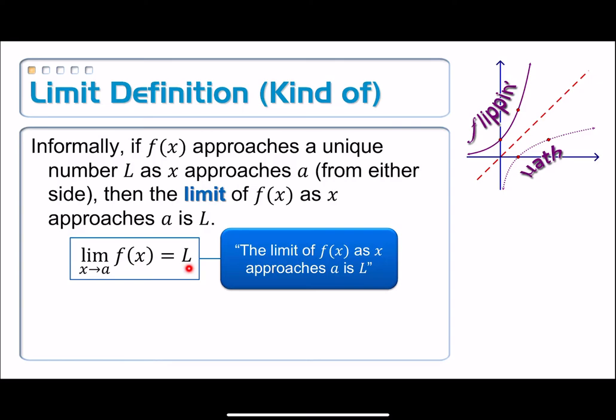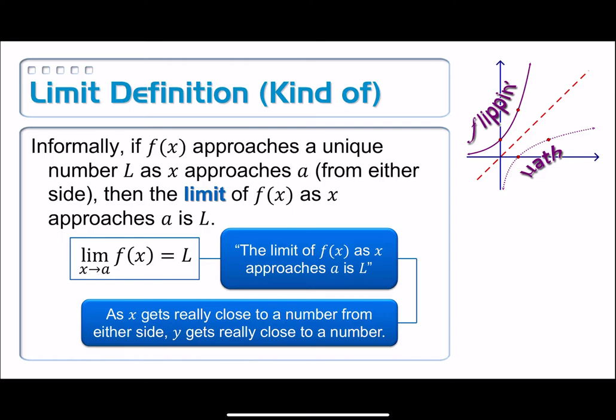So it simply means this: as x gets really close to a particular number, then f of x is also getting really close to a particular number. And it is important to note that it is a unique number. We can't be approaching two different things. As that formal definition pointed out, it doesn't matter if the function's not defined there or not. That's the idea here.